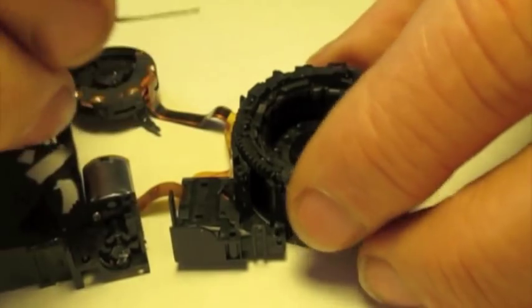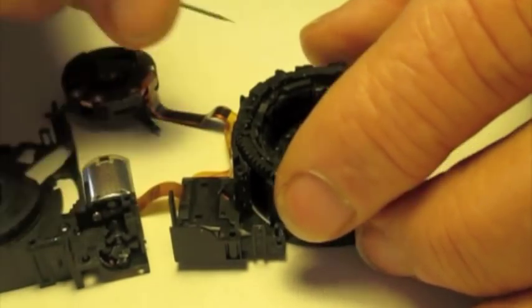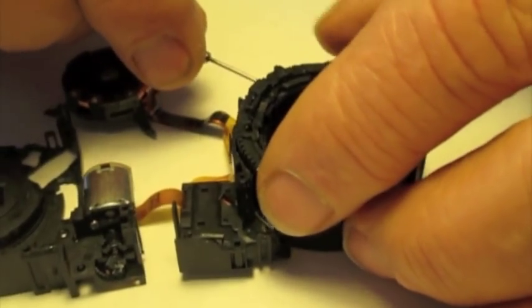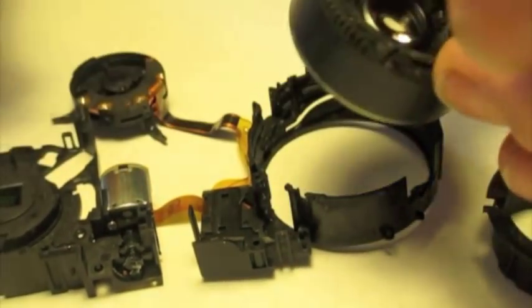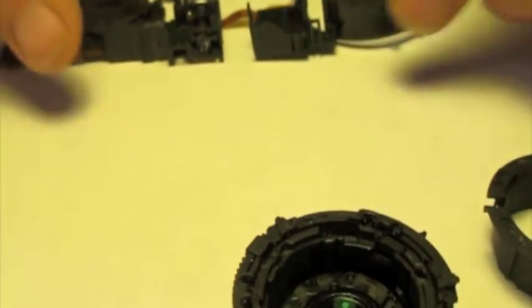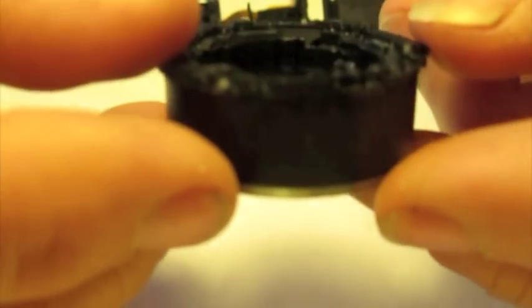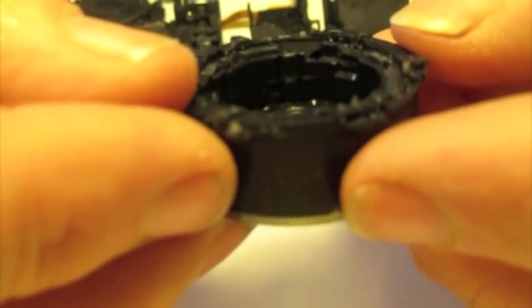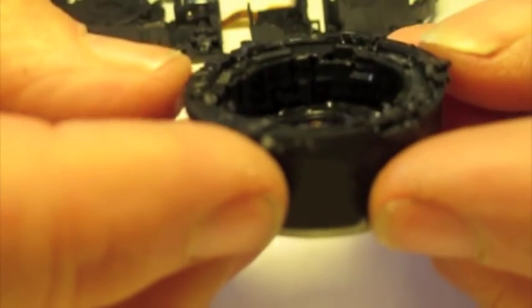Now we'll remove this whole ring extender group. The next thing we're going to pop out is the indexing sleeve.